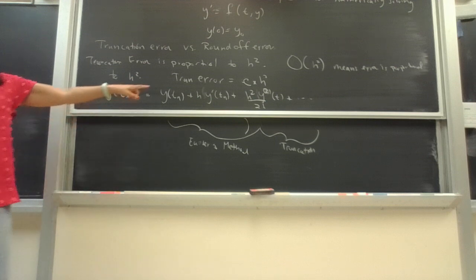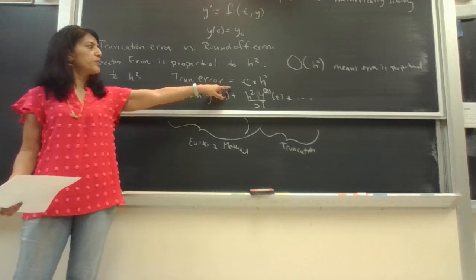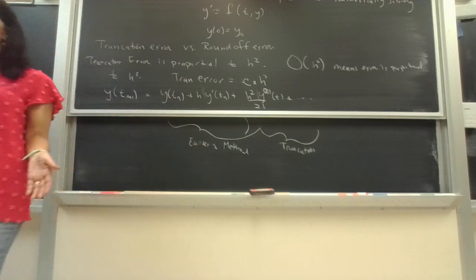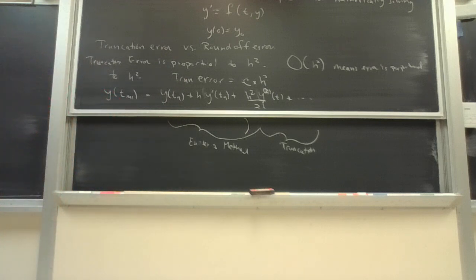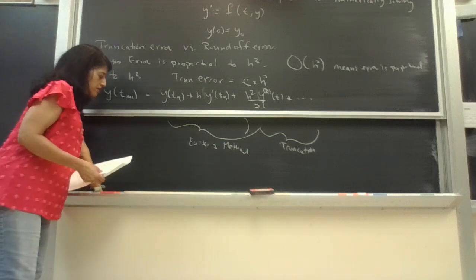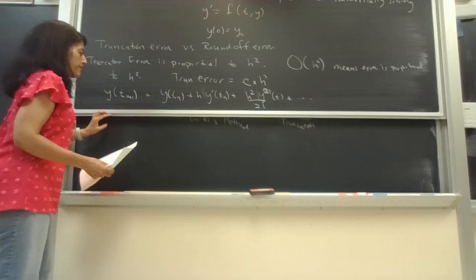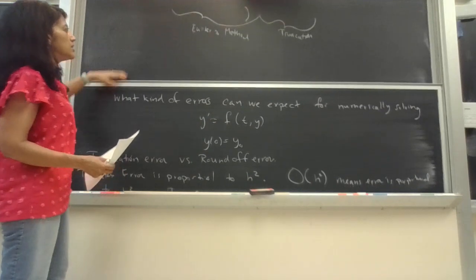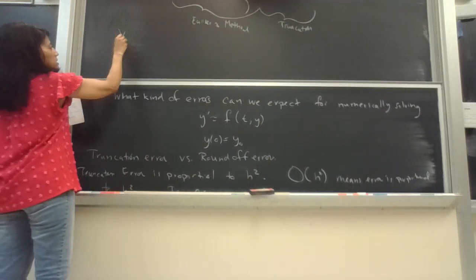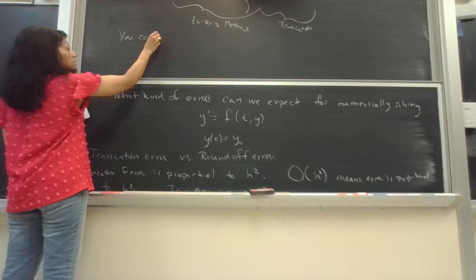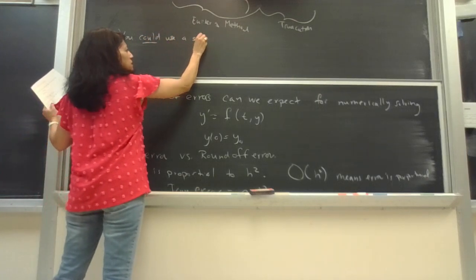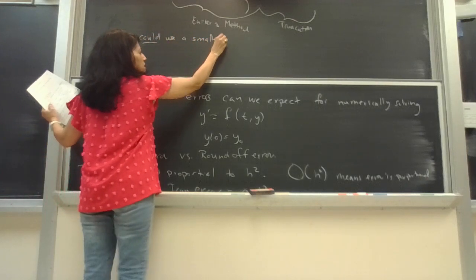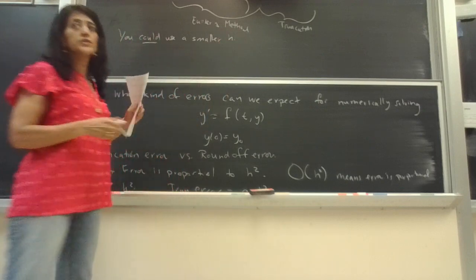So if you see the truncation error, what's one way that you can make that truncation error small even though you cut off Euler kind of early? Yeah, you can do a smaller H.